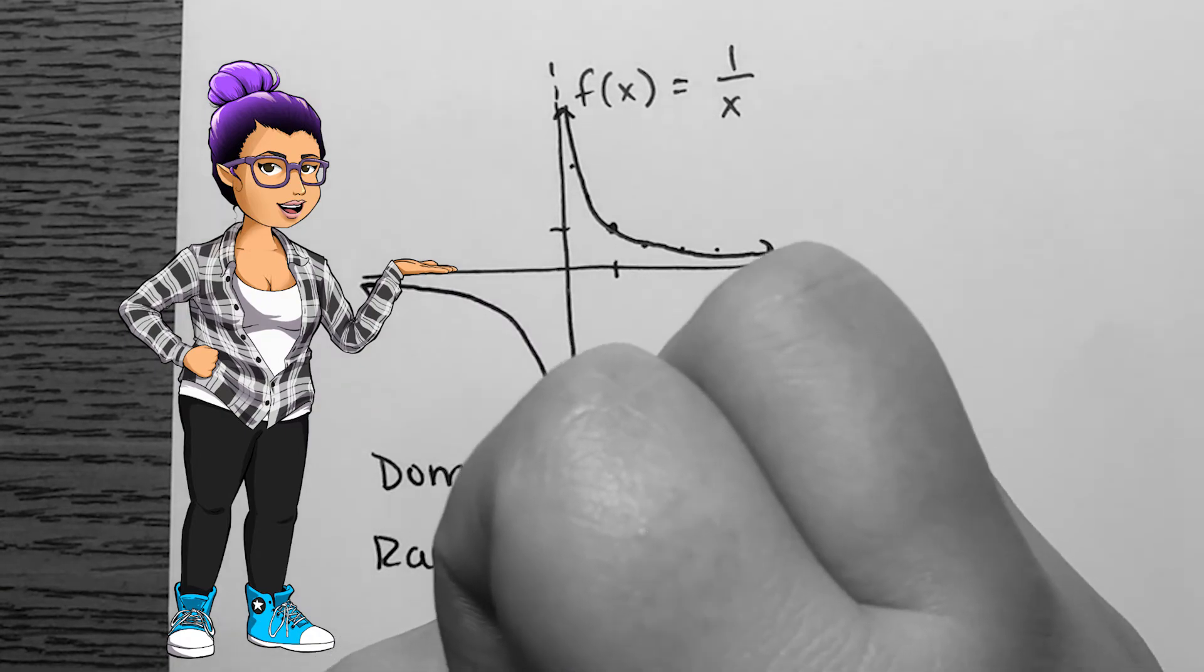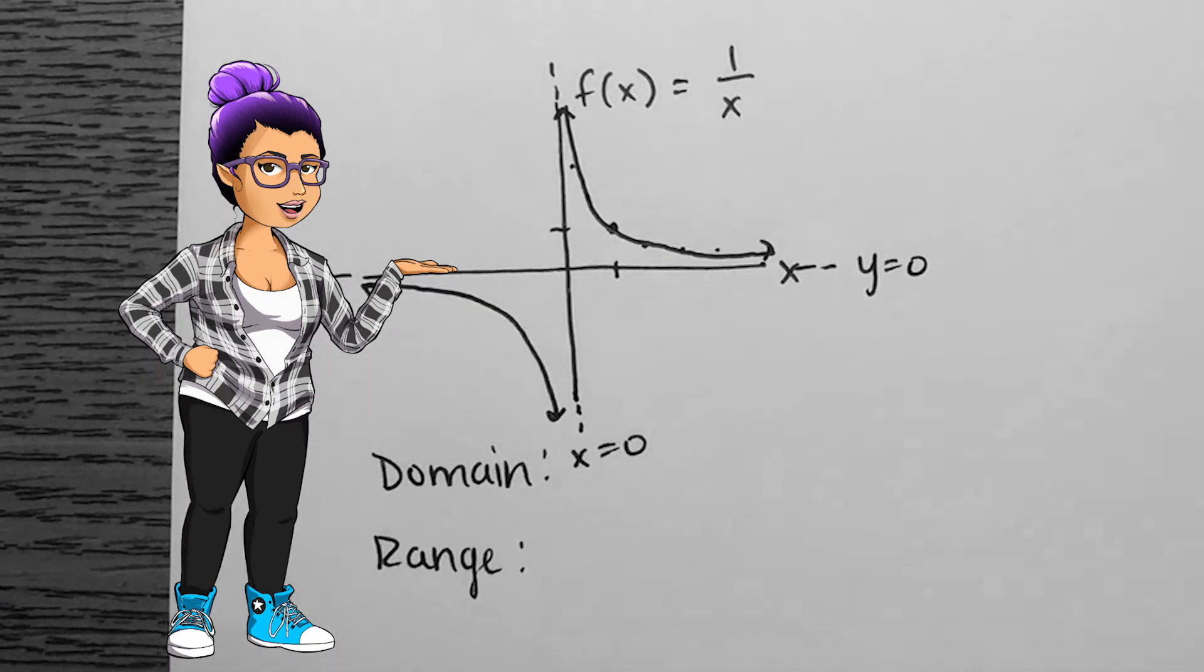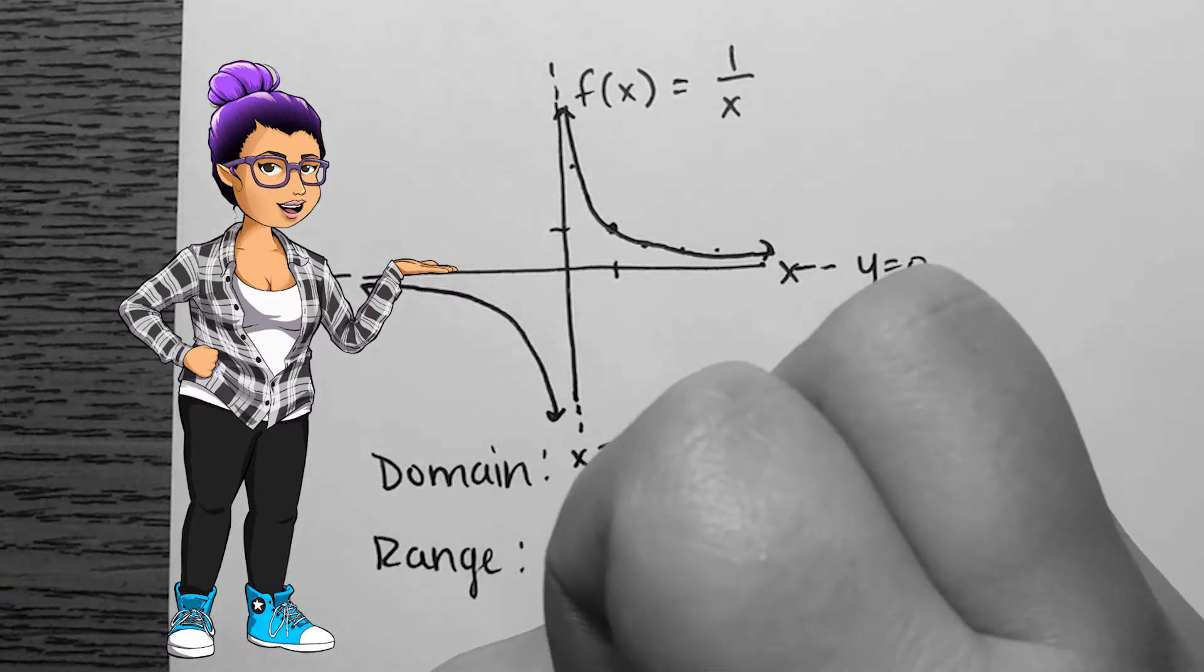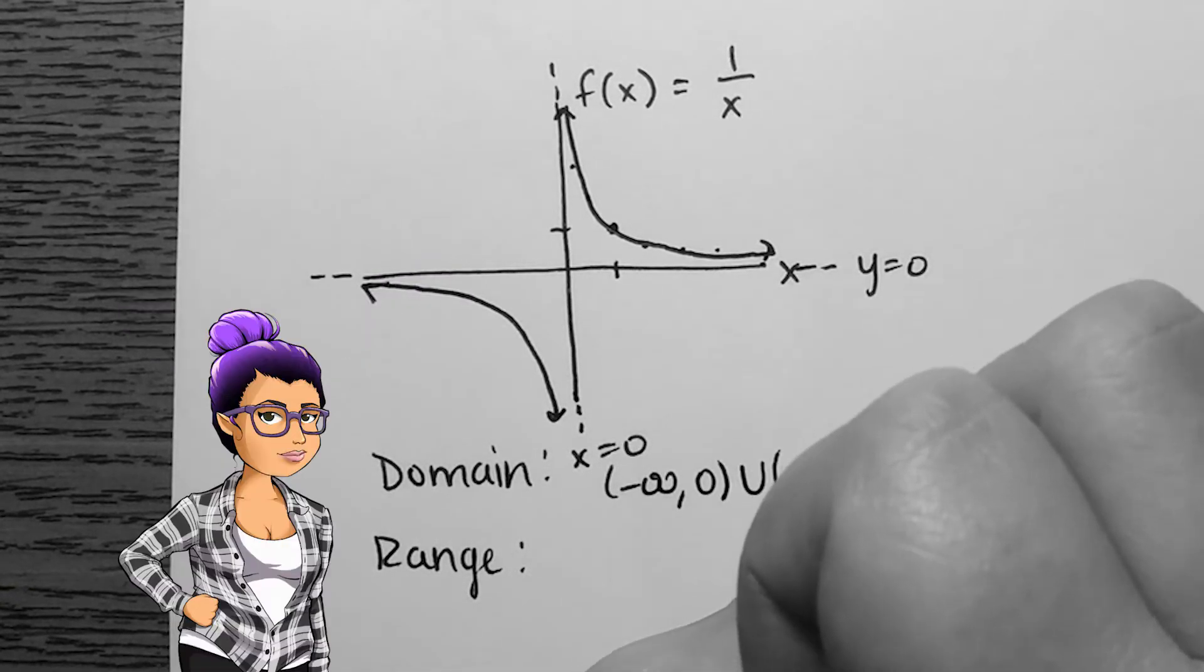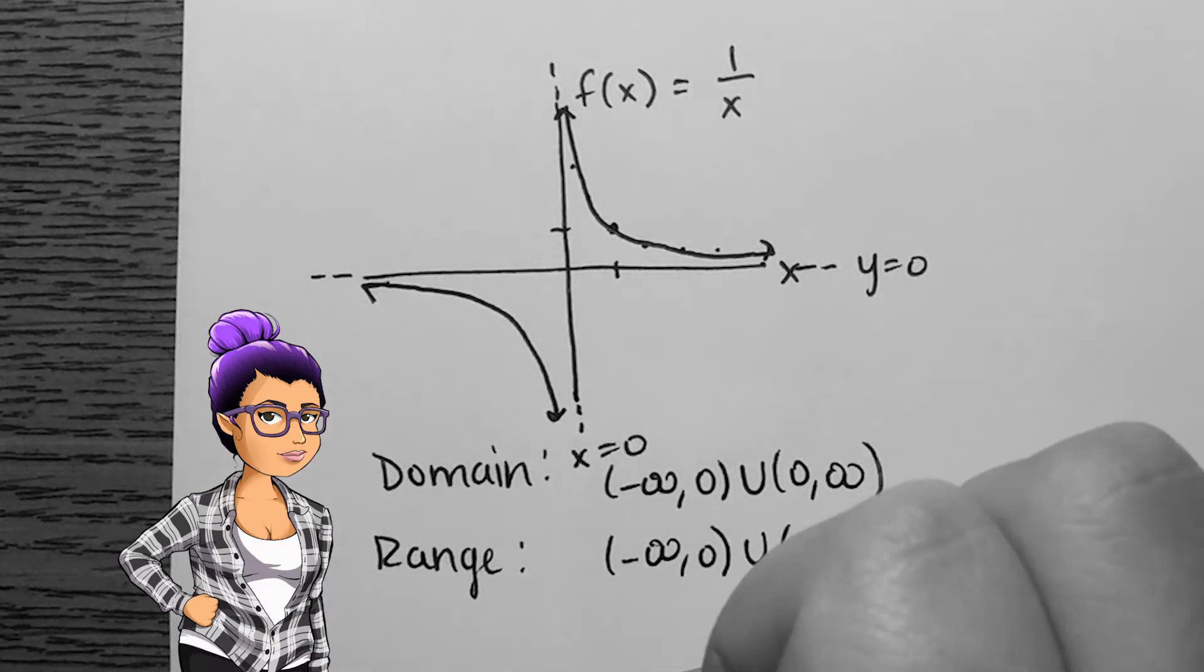There is an asymptote where x is zero, since we cannot divide by it, and another asymptote where the output is zero, since we cannot come up with an input large enough to have a reciprocal of zero. The domain is all real numbers except zero, as is the range.